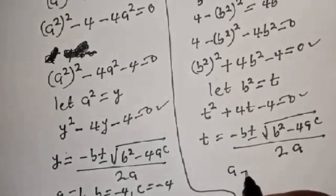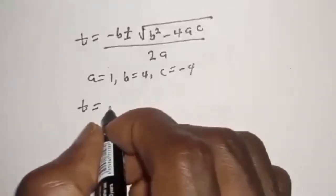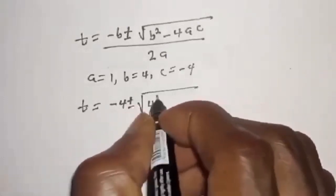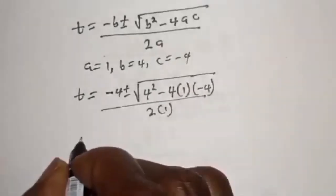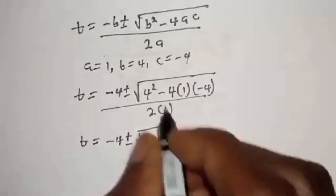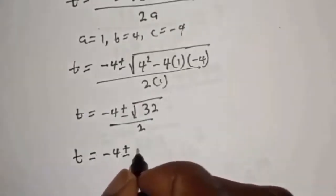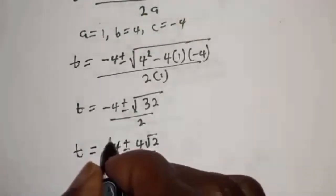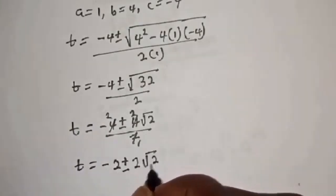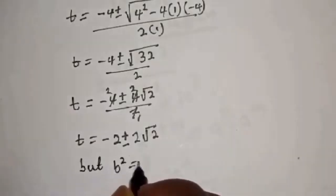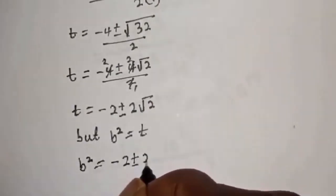Where a equals 1, b equals 4, and c equals negative 4. So t equals negative 4 plus or minus square root of 4 squared minus 4 times 1 times negative 4, over 2. That gives t equals negative 4 plus or minus square root of 32 over 2, then negative 4 plus or minus 4 root 2 over 2, which simplifies to t equals negative 2 plus or minus 2 root 2. Since b squared equals t, we have b squared equals negative 2 plus or minus 2 root 2.